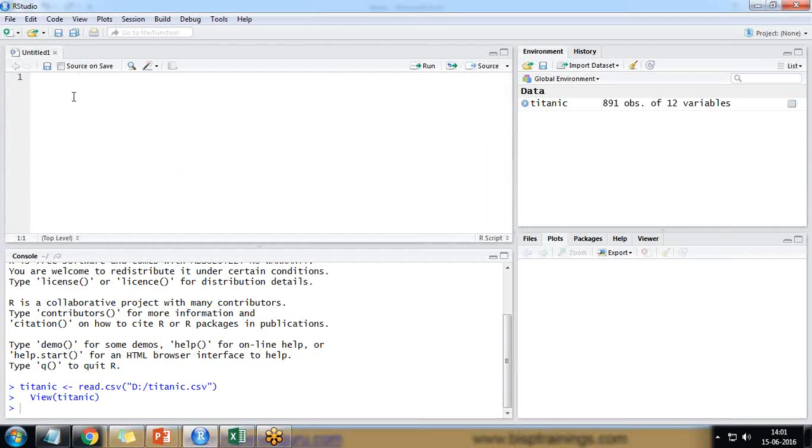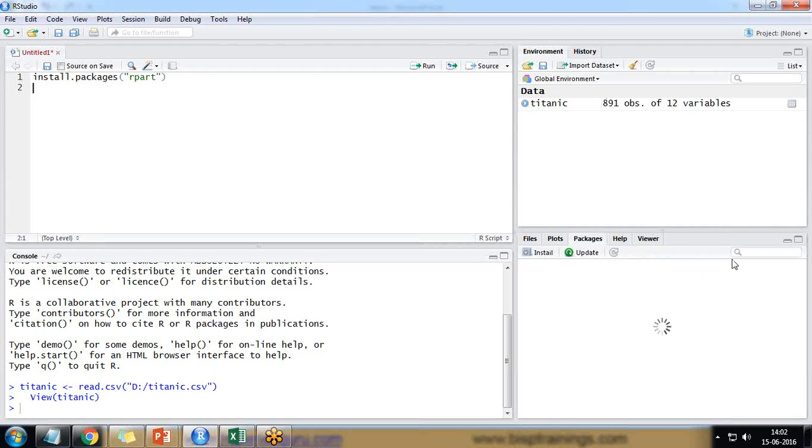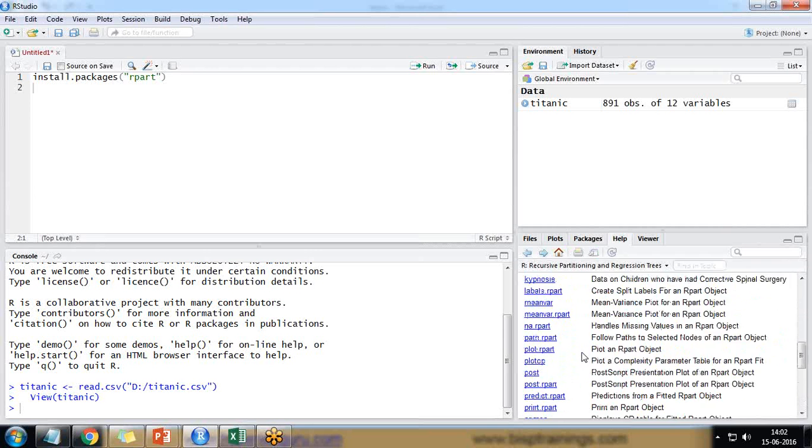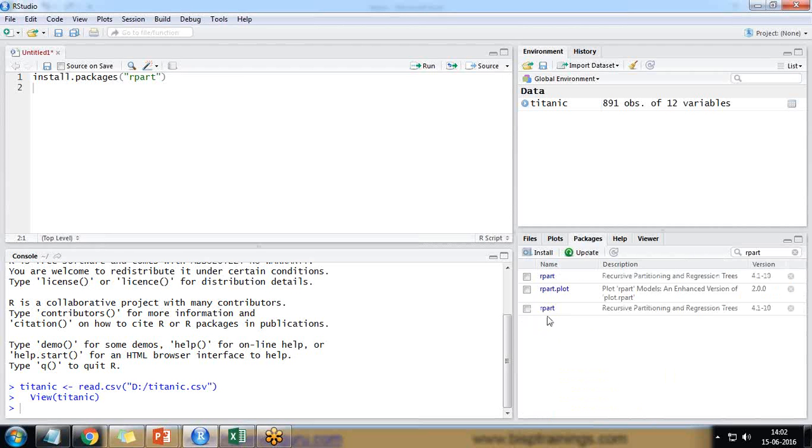For decision tree, we require a few libraries. The first library is rpart - recursive partitioning regression tree. I've already installed it. You can check in the package section if a package is installed. I set the library as rpart and run it.